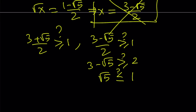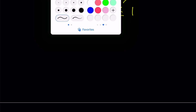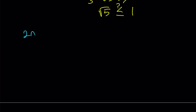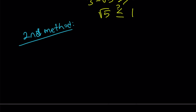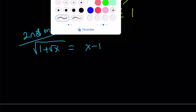Let's take a look at the second method. By the way, thank you so much for the beautiful comments and all the support. You guys are amazing. The second method involves just brute force — we take this expression and square both sides, and we're just going to keep doing it.